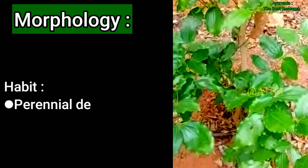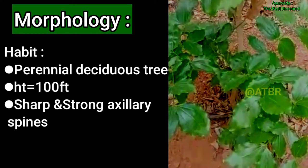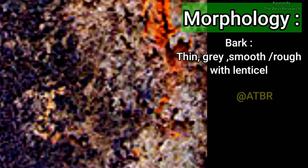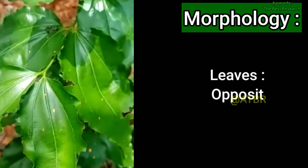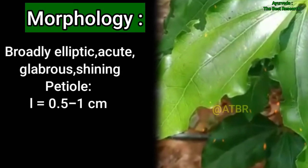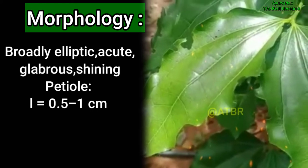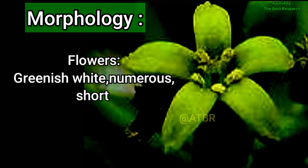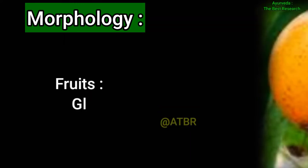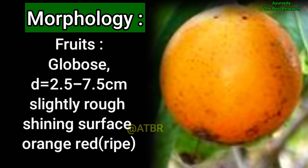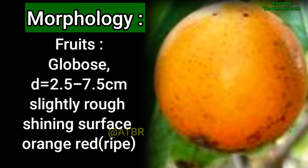Morphology: it is a perennial deciduous tree that grows up to 100 feet in height. The tree has sharp and strong axillary spines. Bark is thin, grey, smooth or rough with lenticels. Leaves are opposite, 7.5 to 15 cm long and 4.5 to 7.5 cm wide, broadly elliptic, glabrous and shiny, with a petiole of 0.5 to 1 cm long. Inflorescence is cymose type. Flowers are greenish-white in color, numerous, with a short pedicel. Fruits are globose, 2.5 to 7.5 cm in diameter, slightly rough with a shining surface, becoming orange-red on ripening, with many seeds.